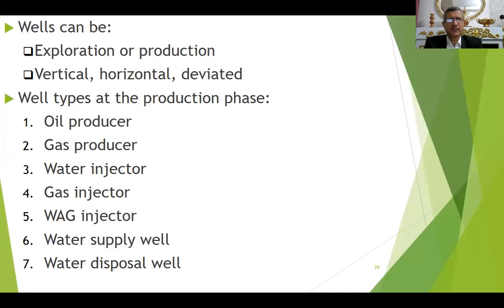We have the types of wells also. We have exploration and production. We have vertical, horizontal, and deviated. Four types of wells also depending on how we produce or inject: oil producer, gas producer, water injector, gas injector, WAG (water alternating gas injector), water supply well, and water disposal.